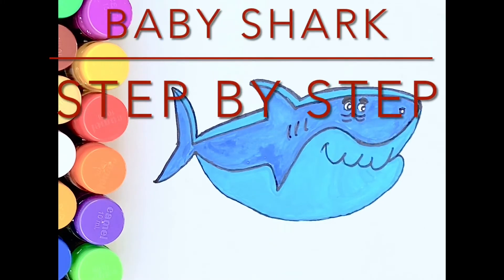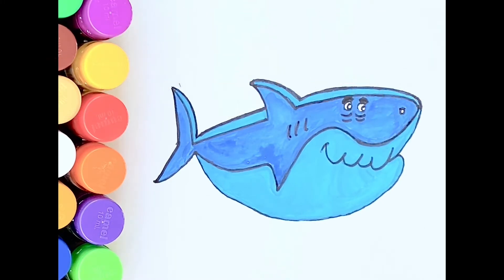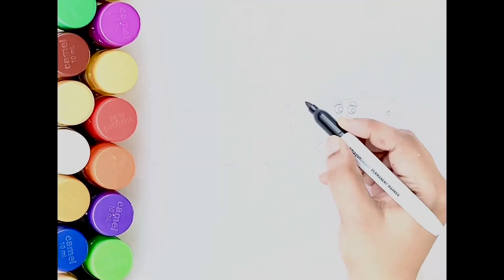Hello kids, today we are going to see how to draw and color a baby shark by using curves with alphabet B, S, and U. Come, let's start. First, draw your open curve.